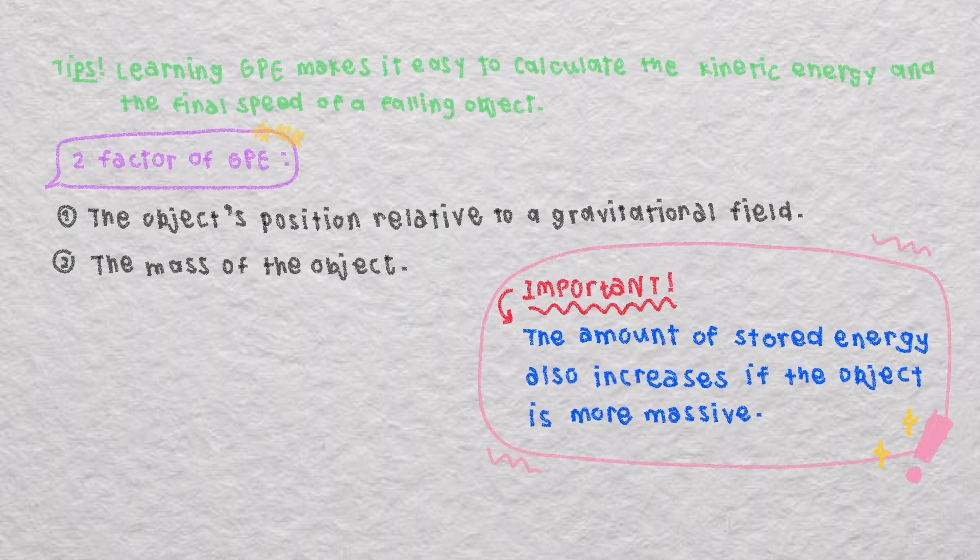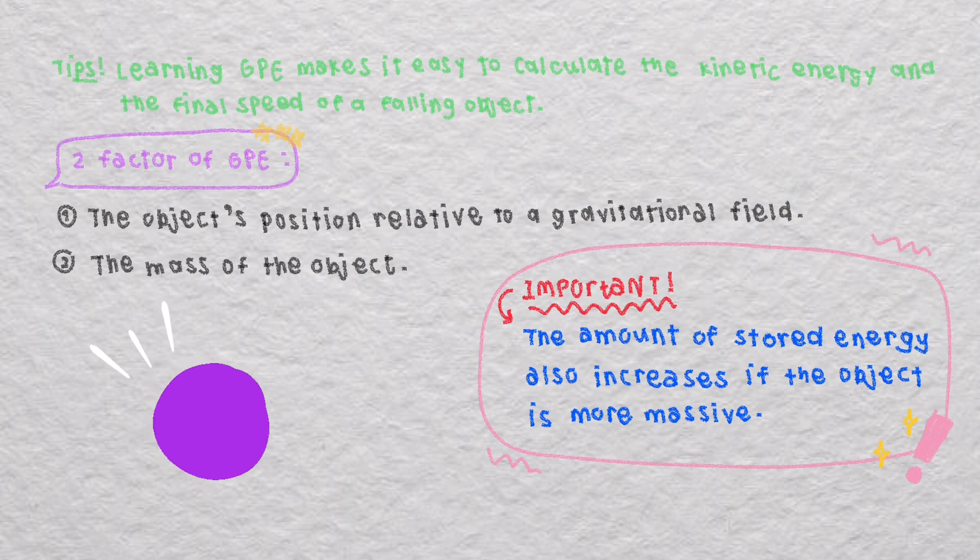The object's position relative to a gravitational field and the mass of the object. The center of mass of the body creating the gravitational field is the lowest energy point in the field, and the farther from this point the object is, the more stored energy it has due to its position. The amount of stored energy also increases if the object is more massive.